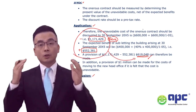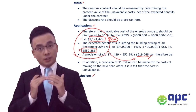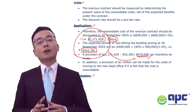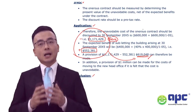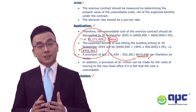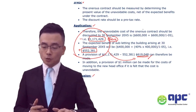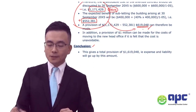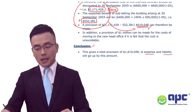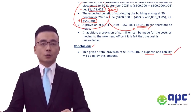So I would need to recognise — debit expense of $619,048 and credit the provision liability. And of course this would increase the expense as well as the liability on the financial statements.